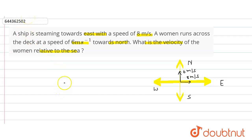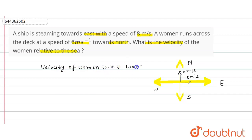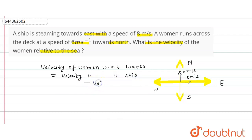The relative velocity of the woman with respect to water is given by: velocity of the woman with respect to sea equals velocity of the woman with respect to the ship, plus velocity of the ship with respect to water. Since the ship moves east and the woman moves north relative to the ship, these two velocity vectors are perpendicular to each other.